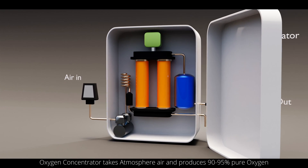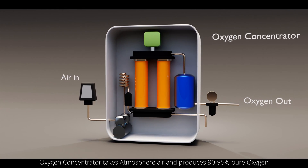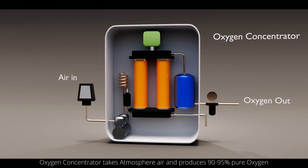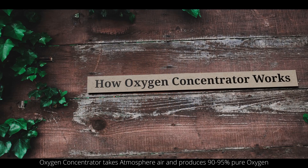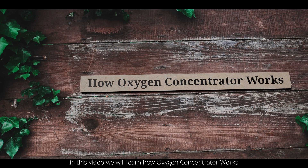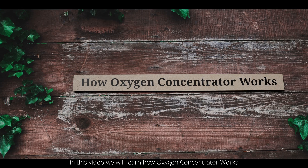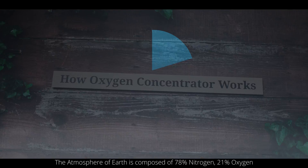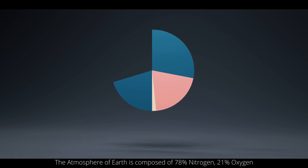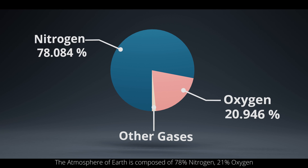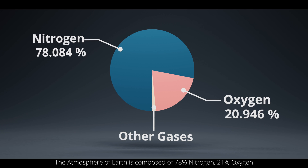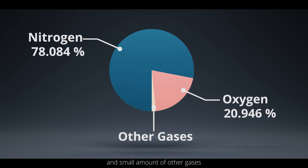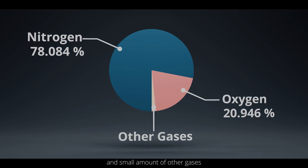The oxygen concentrator takes atmospheric air and produces 90-95% pure oxygen. In this video, we will learn how an oxygen concentrator works. The atmosphere of Earth is composed of 78% nitrogen, 21% oxygen, and a small amount of other gases.